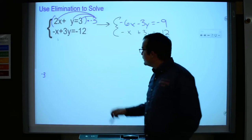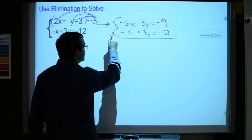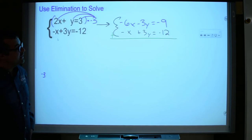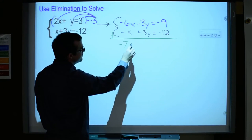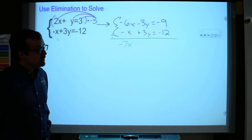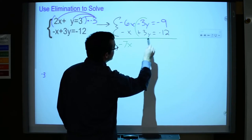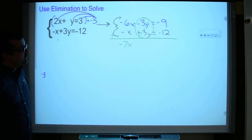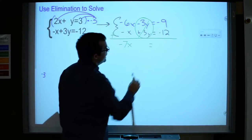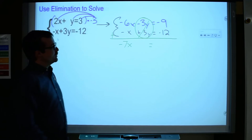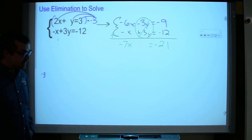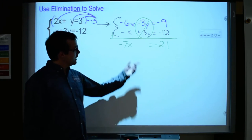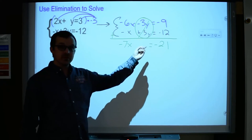Now let's try adding again. See what happens. Negative 6x plus a negative x is negative 7x. Negative 3y plus 3y, that's going to cancel out because there are opposite coefficients there. That's good to see. And then negative 9 plus a negative 12 is what? Negative 21. So cool. We did eliminate, and that's exactly what we were trying to do. And now we can solve for x because it's the only variable left.